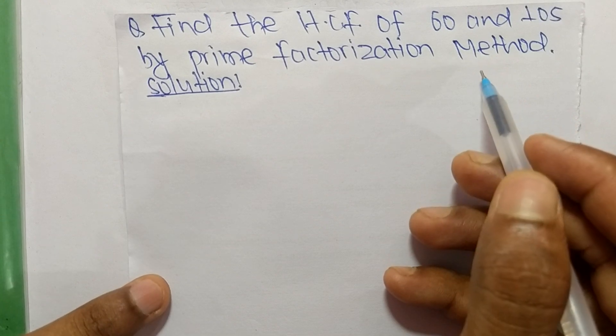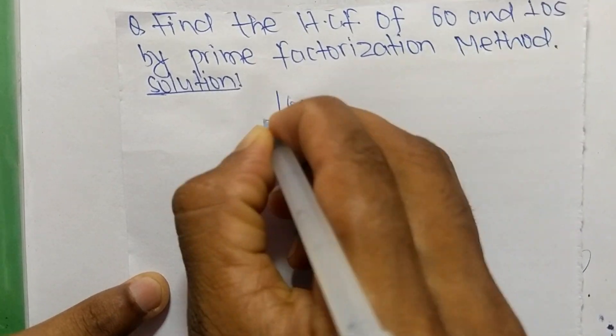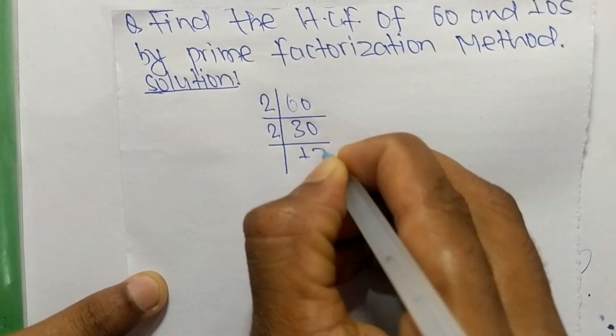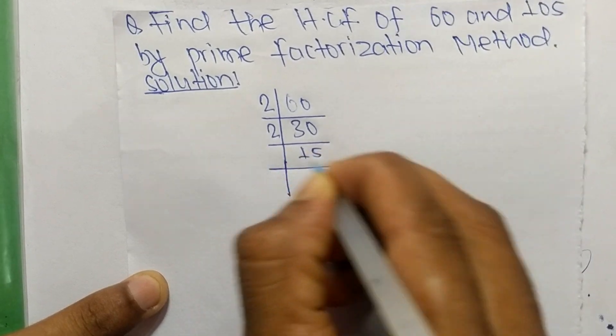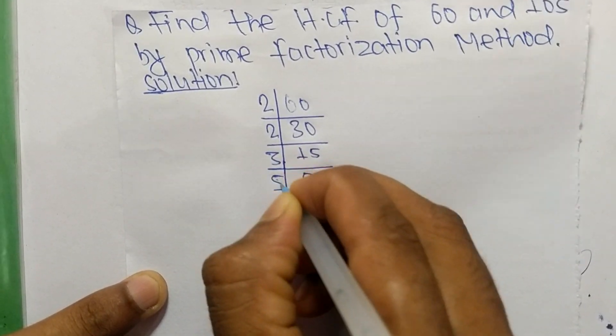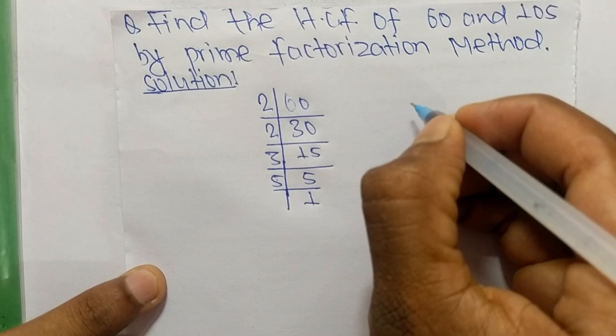So first of all, you find out the prime factors of 60. So it is 2 times 30 mean 60, 2 times 15 mean 30, 3 times 5 mean 15, and 5 times 1 mean 5.